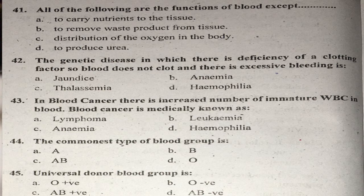Question forty-three: In blood cancer, there is an increased number of immature WBC in blood. Blood cancer is medically known as leukemia. Right answer — leukemia.